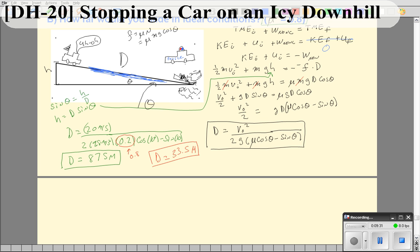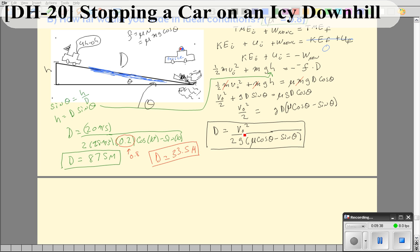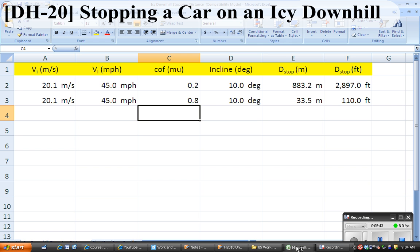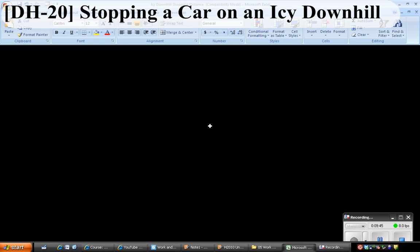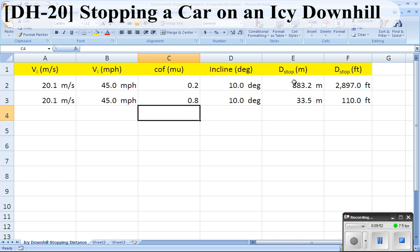Let's do one of my favorite things, which is to look in a spreadsheet. This relationship, d equals v naught squared over 2g and all that stuff, when you put it in a spreadsheet you can change the numbers very quickly without having to recalculate. As you can see, at 45 miles an hour, which is almost 20 meters per second, you get a stopping distance around 875 meters. With coefficient 0.8, you get much less - 33 and a half meters.